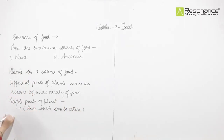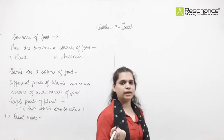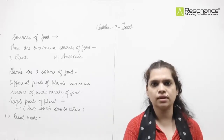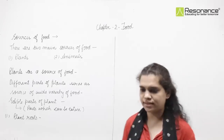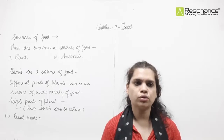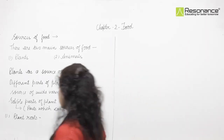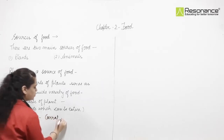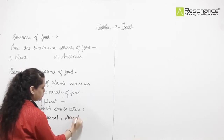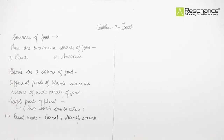The first edible part is plant roots. For example, carrots, turnip, and radish — these are plants whose roots we consume as food.